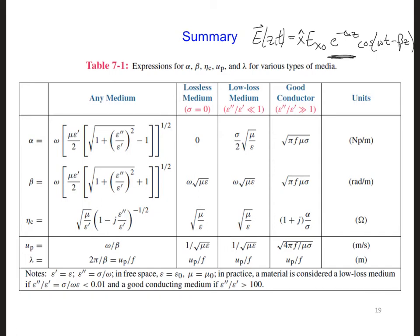Because there is this e to the minus alpha z term, the wave diminishes as it propagates deeper into the wood. As a result, this alpha value is called the attenuation constant.